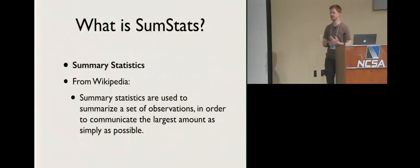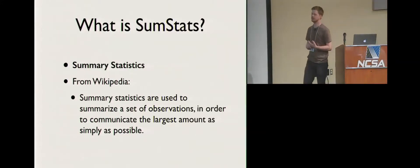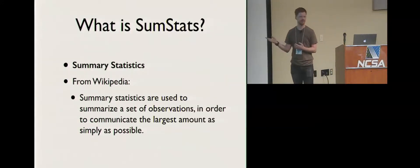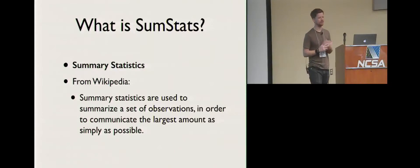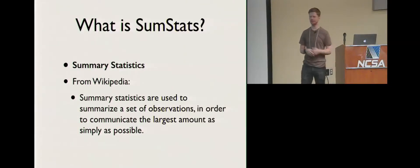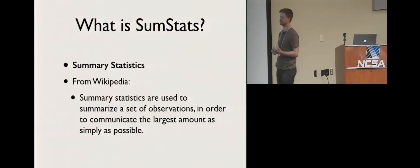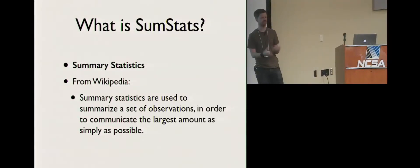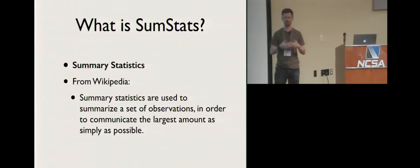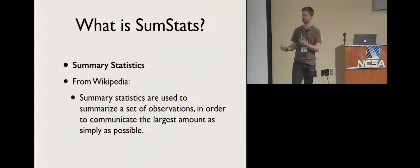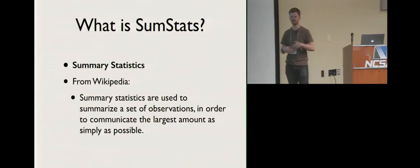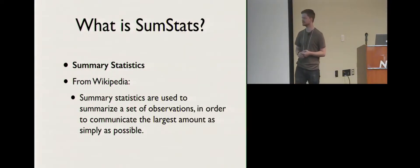Summary statistics — what they really are: you have a bunch of observations and then you apply some math or something on that series of observations to sort of condense the information. You can think of summing — just adding up a billion numbers. A sum of those numbers is a summary statistic. But there are other things like variance and standard deviations, and a lot of different things that you can derive from that.